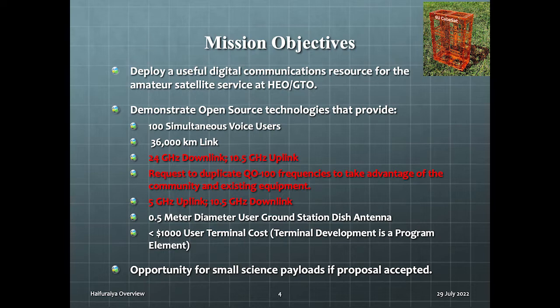So a full transponder would have 1, 2, 5, 10, and 24 gigahertz bands represented. Note the 0.5 meter dish requirement. This is from JAMSAT. Japanese operators have limited space to work with. This is a change from the original proposal, and it does affect the link budget.